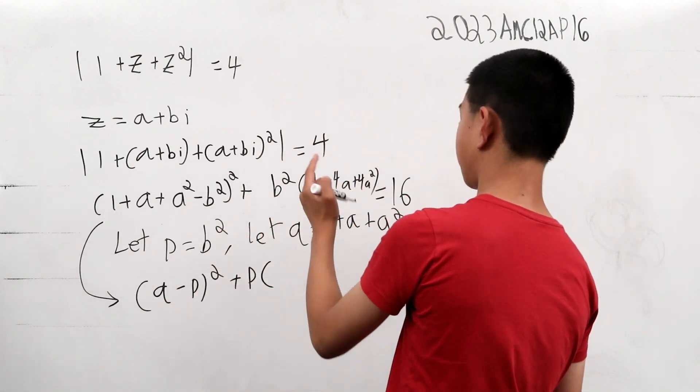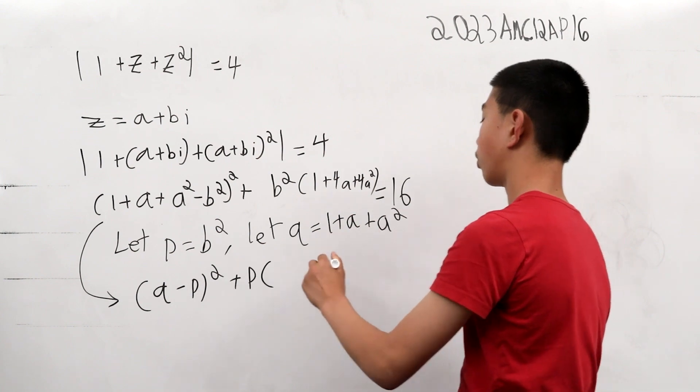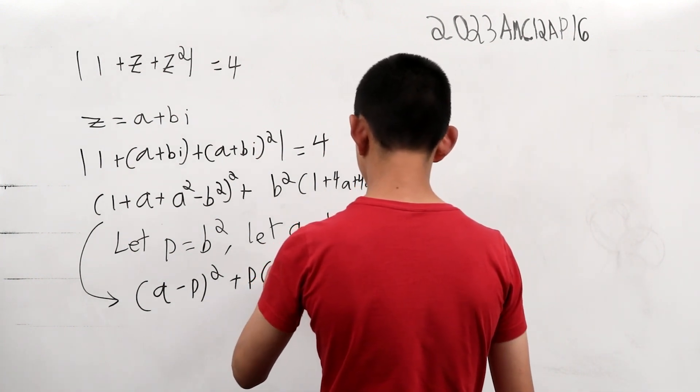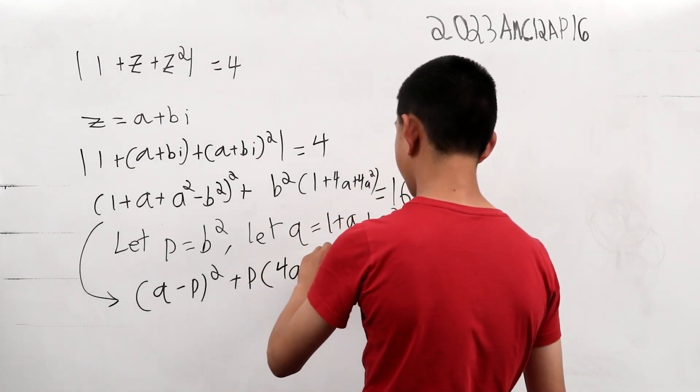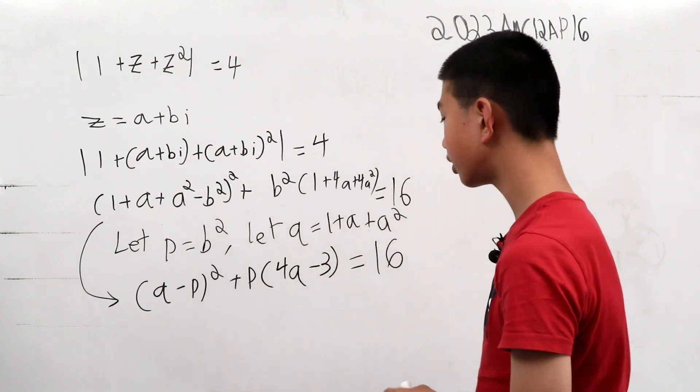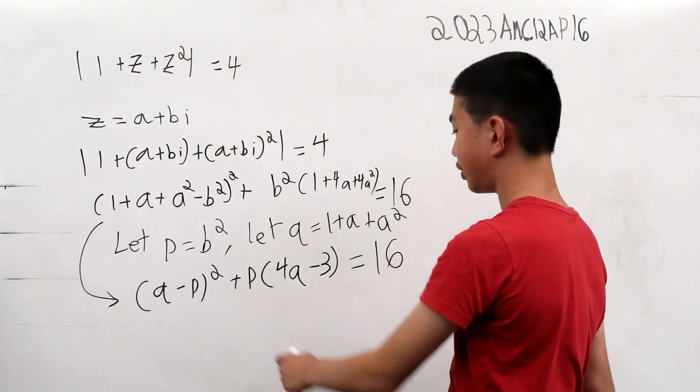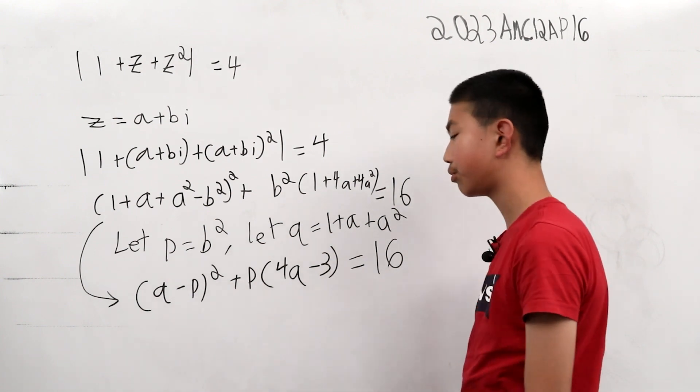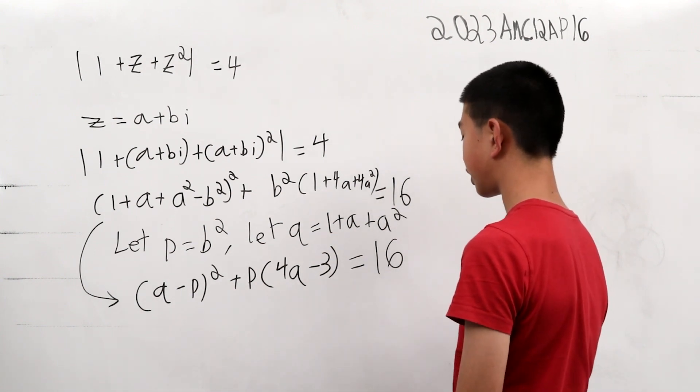plus p times, well, we could express this as 4q's, and then subtract a 3, which is equal to 16. Now, we have it in a much easier form for us to compute, and we will eventually find the answer with this.